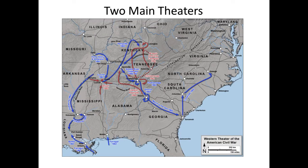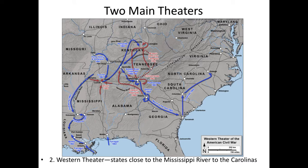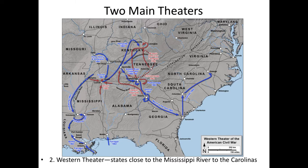The other theater is basically everything else — the Western Theater. Everything west of the Virginia area, west of the Washington D.C./Richmond area, all the way to the Mississippi River. The Western Theater is going to involve, initially, much more effort toward taking over the Mississippi River. Once that part of the Anaconda Plan has been fulfilled, you will see the Union basically start to go through the heart of the South, ripping up railroads now that they've got the Mississippi River under control.